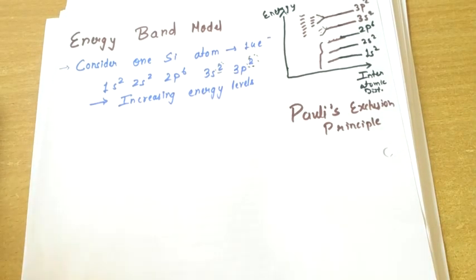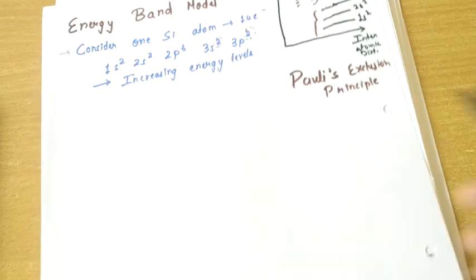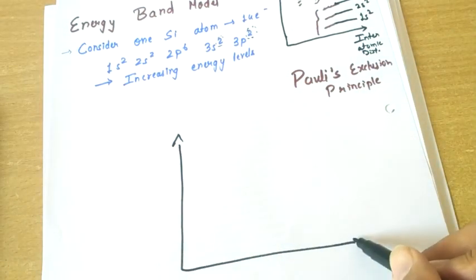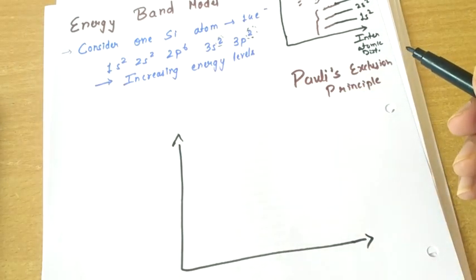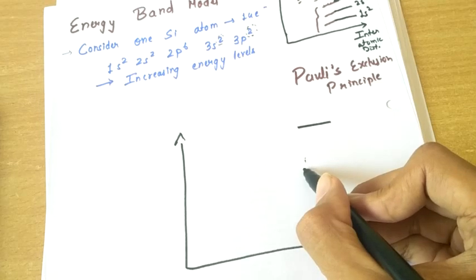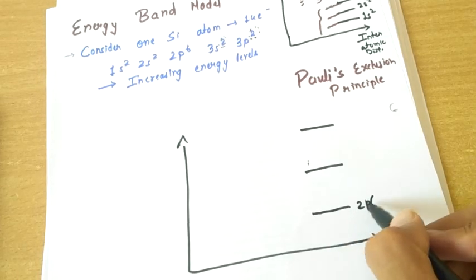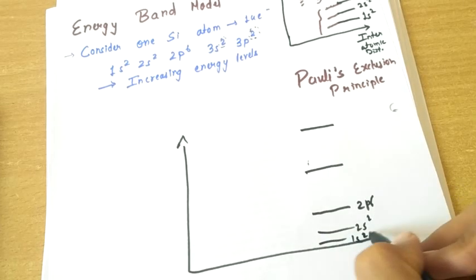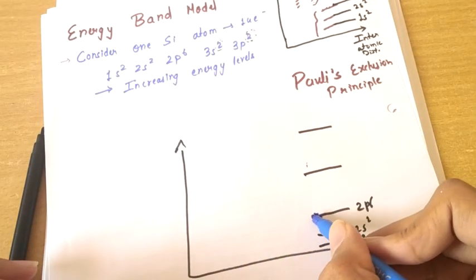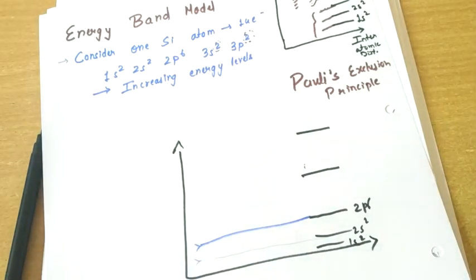As more and more atoms interact, the energy levels are split further and further. Now let me draw the resultant figure to show how a band is actually formed. Again drawing the diagram: 3p2 at the top, then 3s2, then 2p6, 2s2, and 1s2. The inner levels are not our concern and their effect is negligible, so we neglect them.